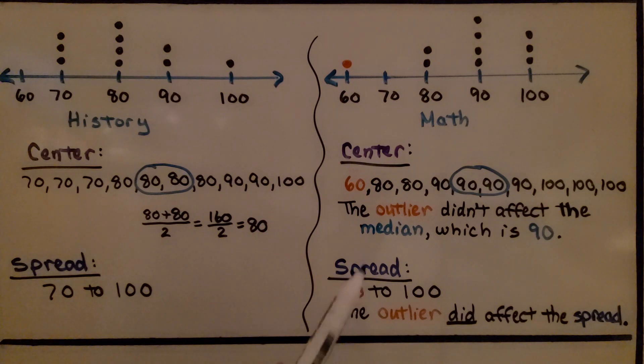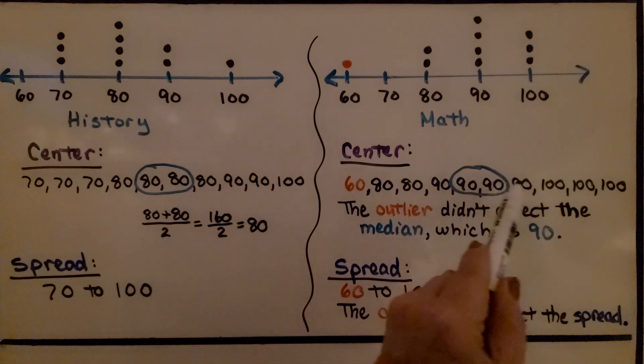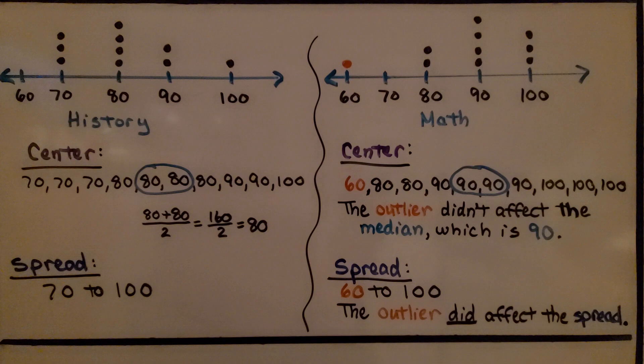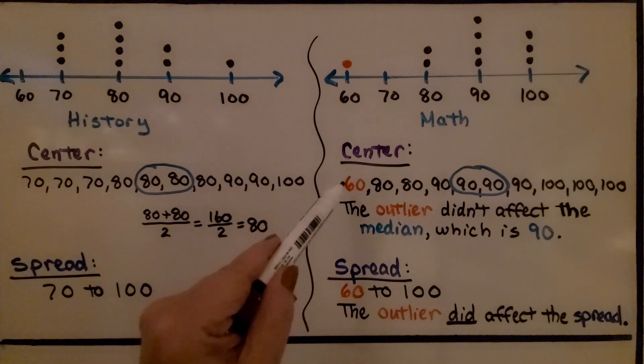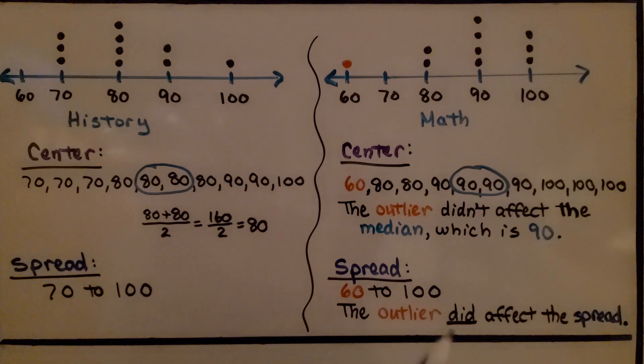For math, our center was found by listing all the values from least to greatest, and the outlier, 60, didn't affect the median, which is 90. The spread is from 60 to 100. The outlier didn't affect the spread.